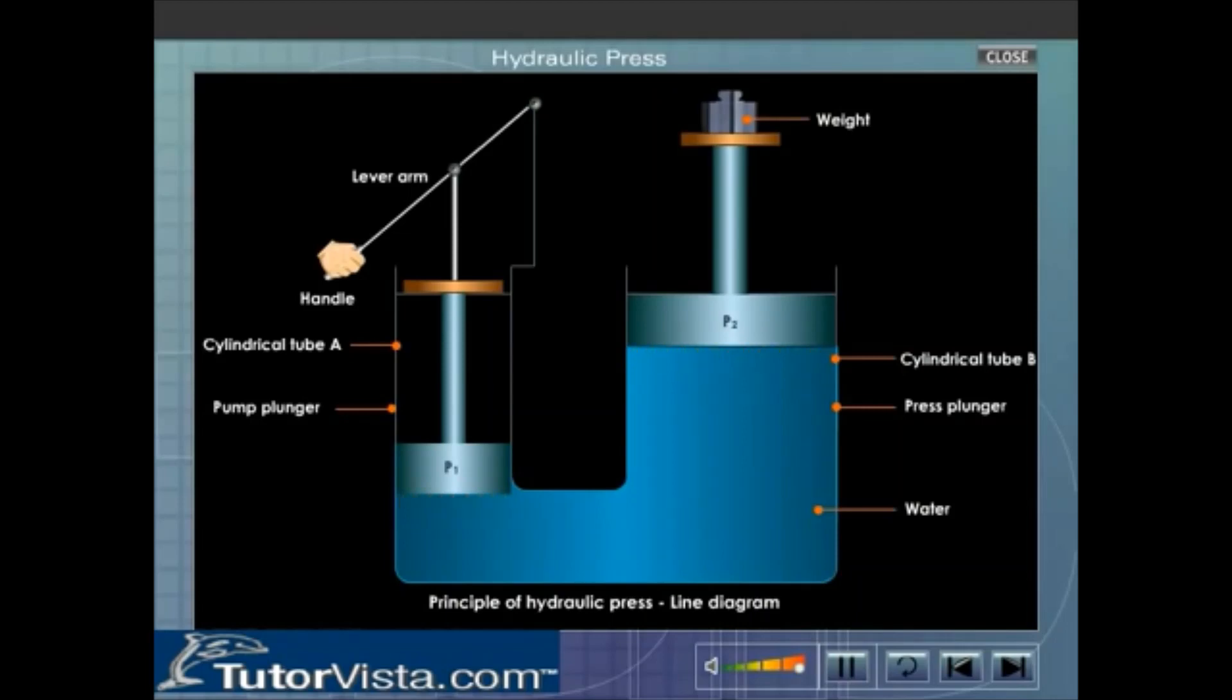Now when a force is applied to the piston P1, it exerts a pressure on the liquid contained in the smaller cylinder or pump plunger. According to Pascal's law, this pressure is transmitted to the piston of the press plunger and due to which the piston P2 is pushed outwards.